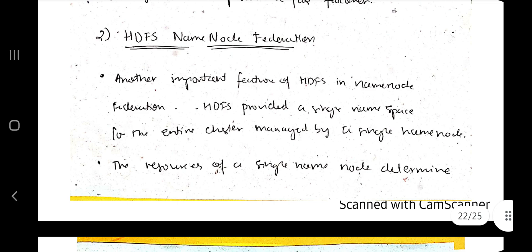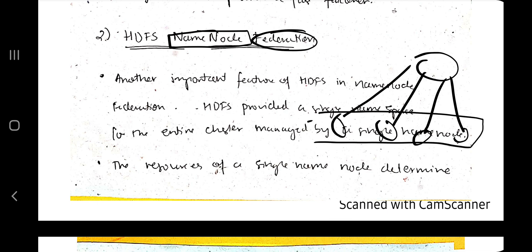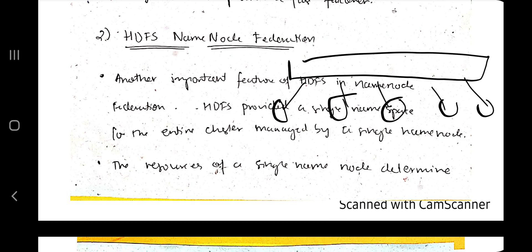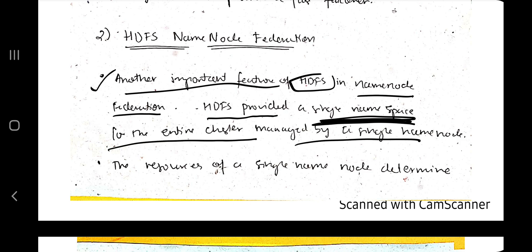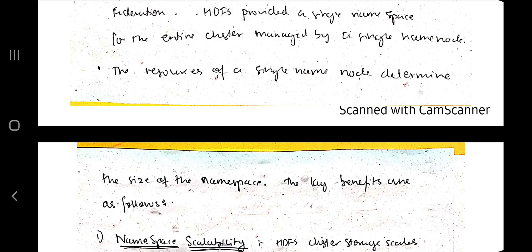The second concept is HDFS name node federation. Federation means a central entity with multiple federates, all interconnected. Federation is needed because many different clusters need to be identified as a single group working for the same resource, so a namespace is provided. An important feature of HDFS name node federation is that HDFS provides a single namespace for the entire cluster, managed by a single name node. When a single name node performs all operations with slaves under it, the entire group is identified as one single namespace.